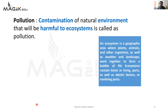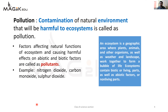So kaun hai jo yeh pollution kar raha hai? Factors affecting natural function of ecosystem and causing harmful effects on biotic and abiotic factors are called as pollutants. Yani jo bhi pollution kar raha hai use hum kya kehenge? Use hum pollutants kehenge. Pollutants ke examples hain - nitrogen dioxide, carbon monoxide, sulfur dioxide, and many more.